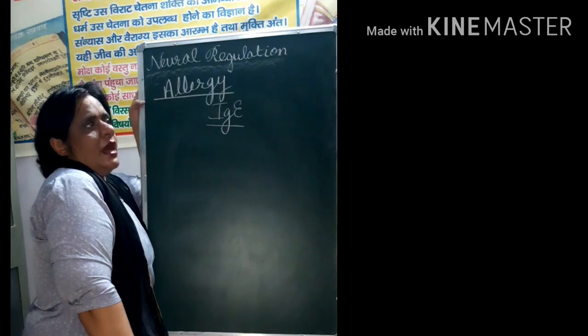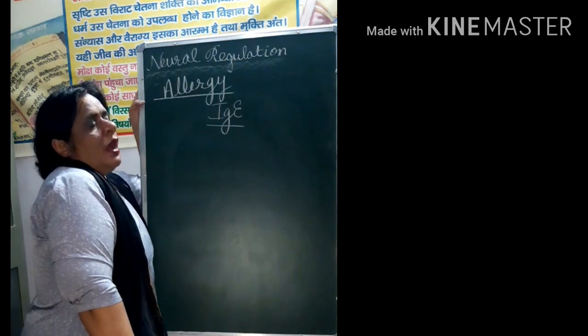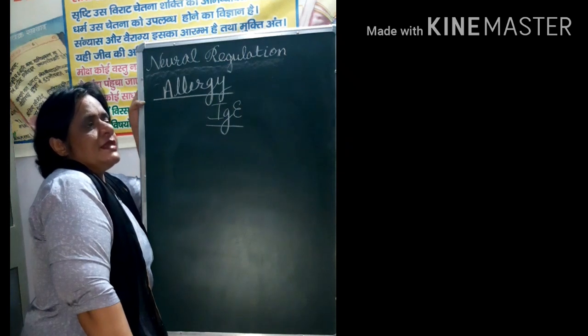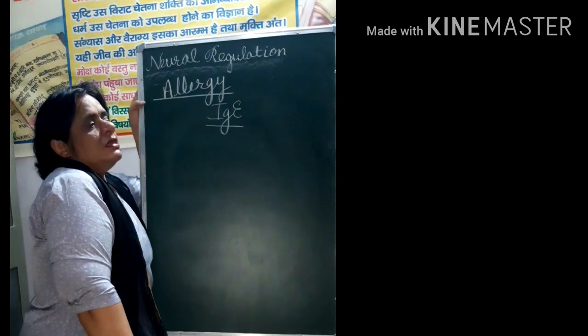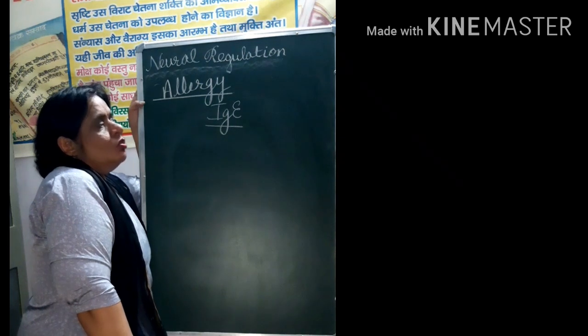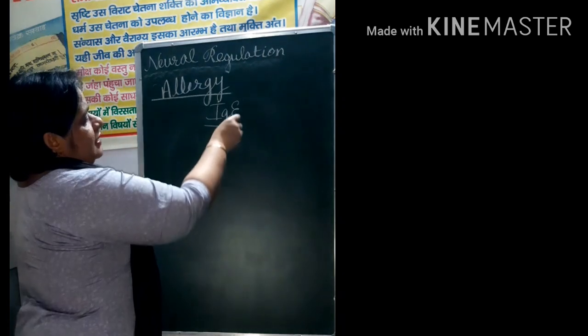But what is the allergy? Allergy is the hypersensitivity. Hypersensitive ho jaye. Kusy ko pollen grain se allergy ho sakti hai. Kusy ko sunlight se allergy ho sakti hai. These are the different type of allergy. Kusy ko dust se allergy ho sakti hai.